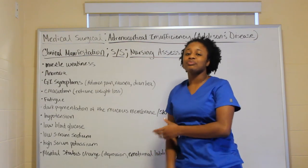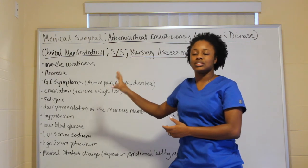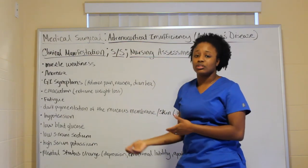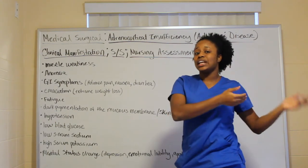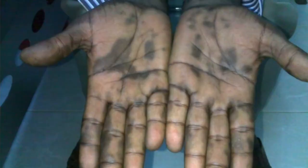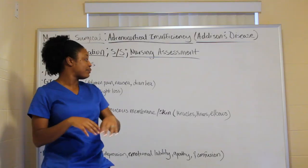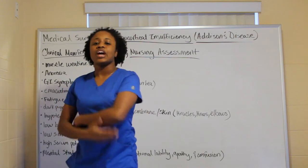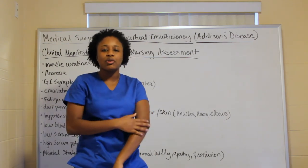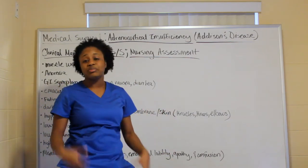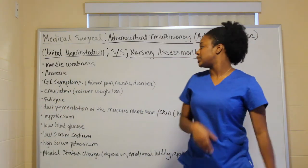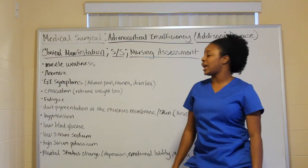A memory tip: with Addison's, think 'add-on weight' because they're losing weight, while Cushing's patients are gaining weight. Other signs of Addison's include fatigue and dark pigmentation of the mucous membranes or skin — the most common areas are the knuckles, knees, and elbows. As a nurse, pick up on those subtle changes.